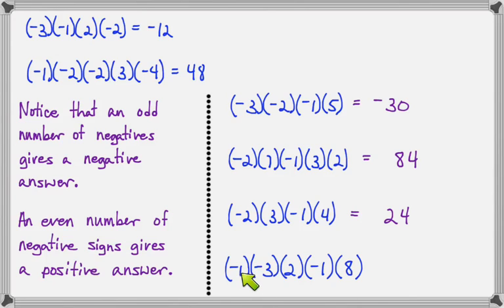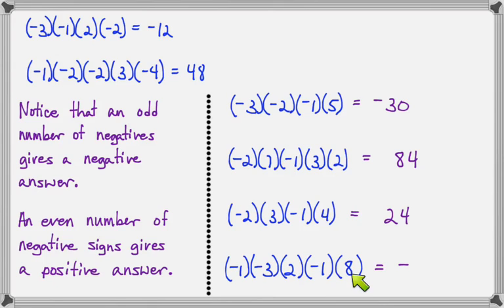On this last one: one, two, three negative signs — odd — so a negative answer. Three times two is six, and six times eight is 48, giving negative 48.